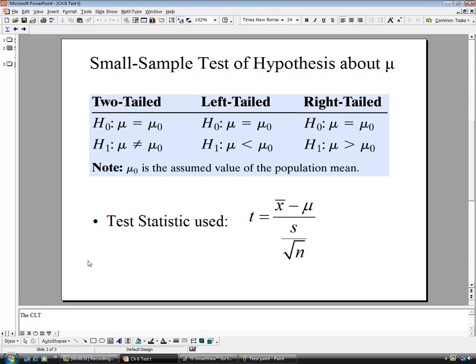Three different possibilities, the same as they are for the large sample test about the mean mu. Two-tailed has doesn't equal. Half of the alpha goes on each side of the distribution and the critical values are 2.